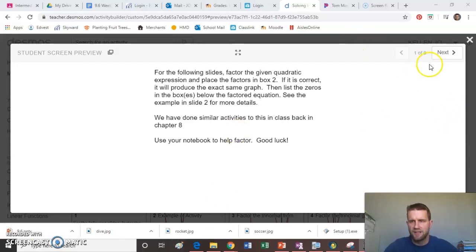As we take a look at a total of nine slides, it says for the following slides, factor the given quadratic expression and place the factors in the box below. If it's correct, it's going to produce the exact same graph. Then we're going to list the zeros because that's the new thing now - we're going to click on where they cross the x-axis and put them in as an ordered pair. Use your notebook as you need to help factor, especially because there may be some that require guess and check.